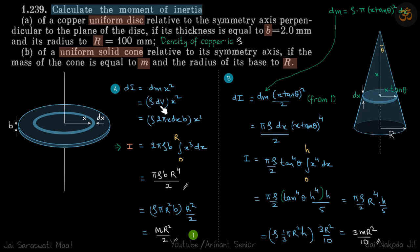dm will be ρ dv, so dv is 2πx dx times b. Now we integrate x from 0 to R. We get the answer in terms of ρ, or we can write this as ρ × πR²b × R²/2, where πR²b is the net volume.